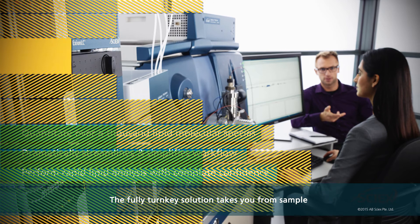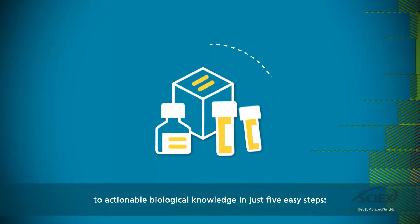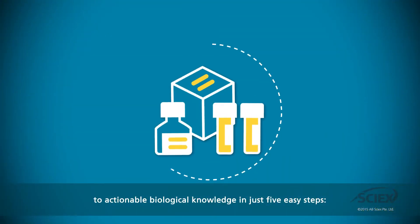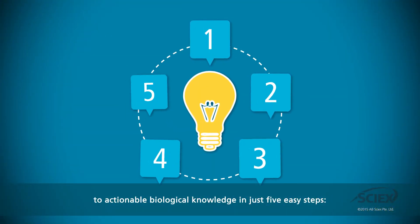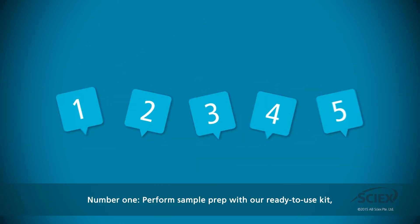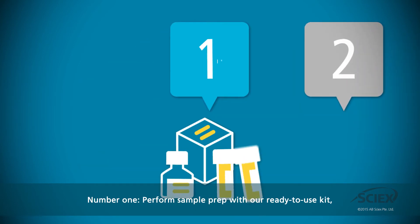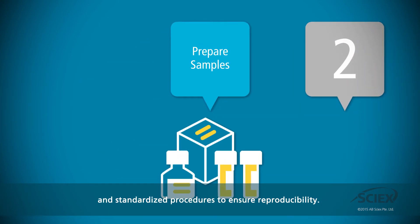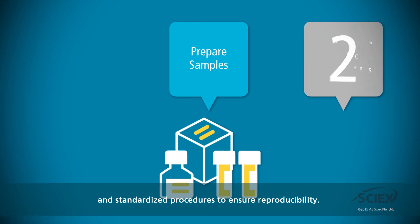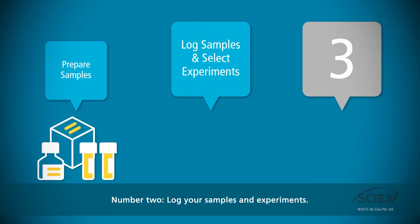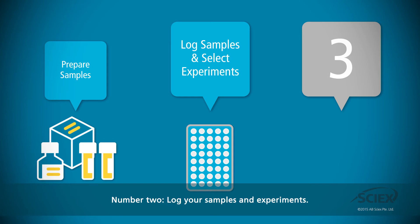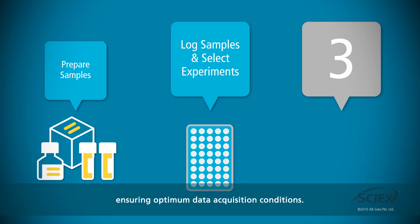The fully turnkey solution takes you from sample to actionable biological knowledge in just five easy steps. Number one: perform sample prep with our ready-to-use kit and standardized procedures to ensure reproducibility. Number two: log your samples and experiments. Method selection is done automatically based on lipid class, ensuring optimum data acquisition conditions.